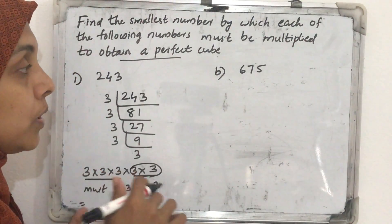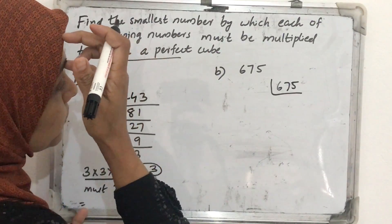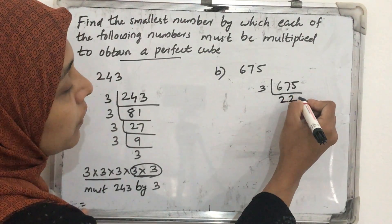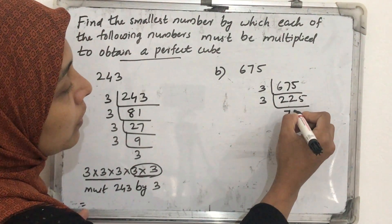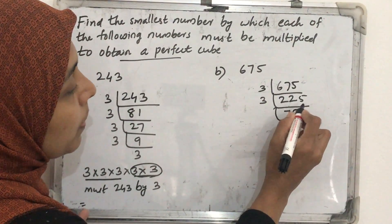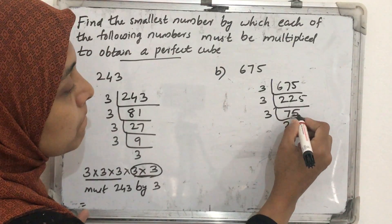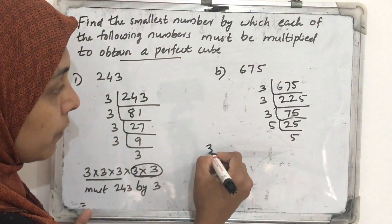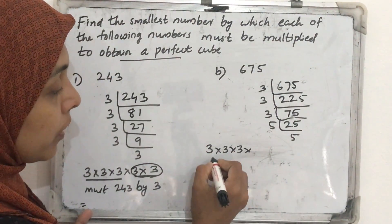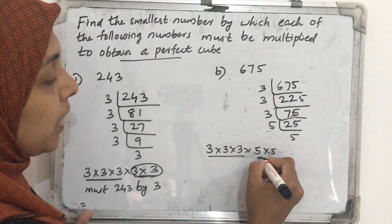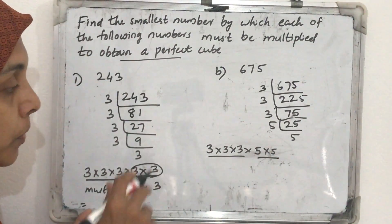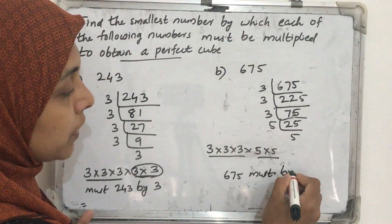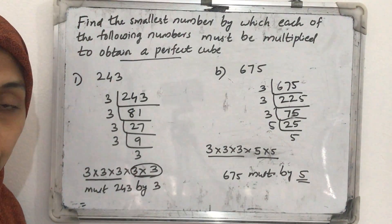This next number is also not a perfect cube. Which number should we multiply to get a perfect cube? We factorize 675: divided by 3 gives 225, by 3 gives 75, by 3 gives 25, by 5 gives 5. So here when we write the prime factors, 3 has a triplet but the number 5 is not in a triplet — one more 5 is needed. So multiply 675 by 5 to get a perfect cube number.